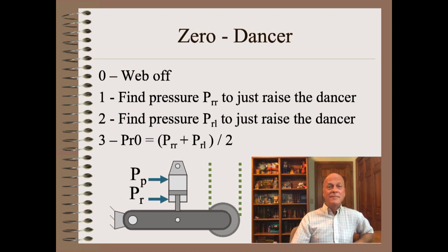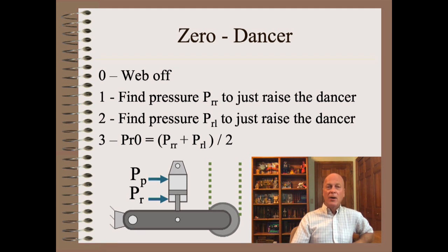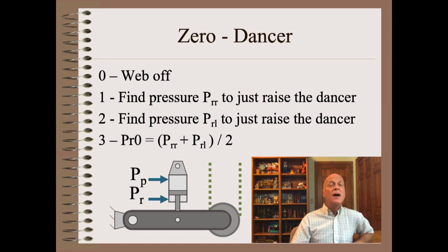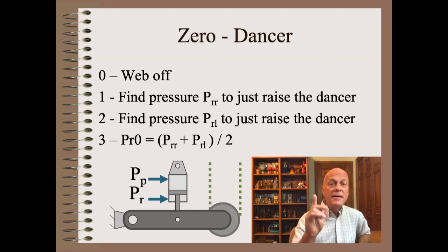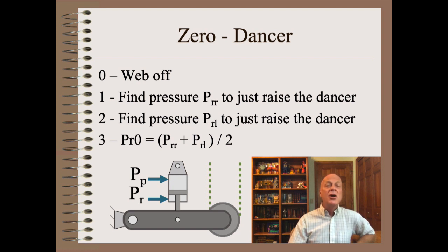So, how did you do? Well, step zero, as you already suspected, is we must set zero with zero web tension — in other words, with web off. Step one is to find the rod pressure required to just raise the dancer. Step two is to find the rod pressure required to just lower the dancer. You may wish to repeat these two steps a couple of times to check for repeatability and use the average result. Finally, step three is that zero for this system is the average of the just-raise and just-lower pressures.